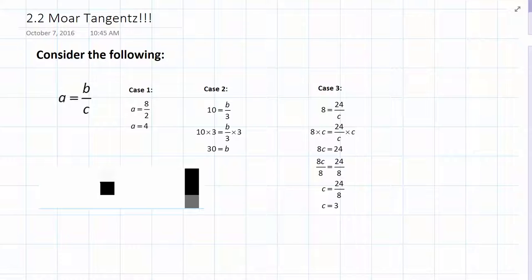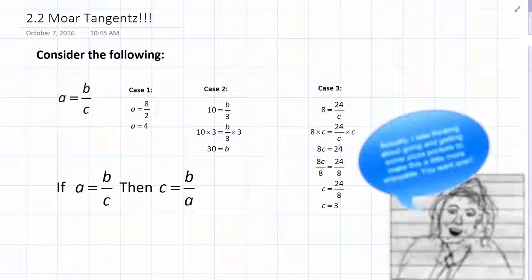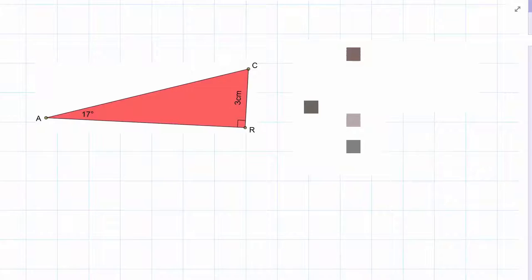Now, you may be sitting there thinking, great, but what does this have to do with trigonometry? Well, consider a situation like this one, where we want to find side C. Obviously, since we have A equals 17 degrees and little a equals 3 centimeters, we could find C by using the tangent ratio.